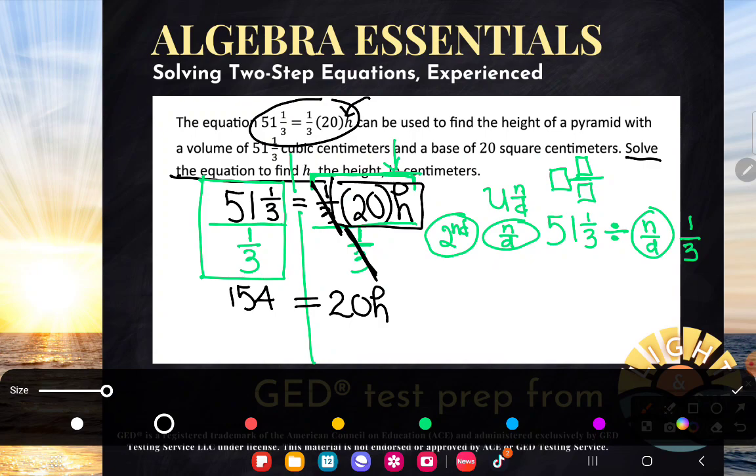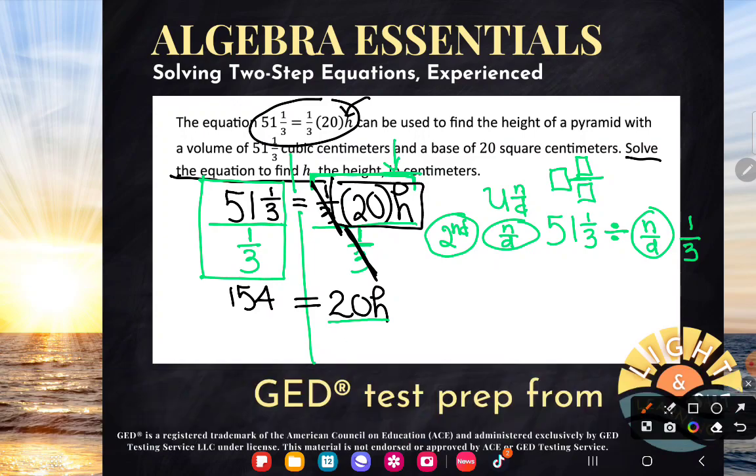because, of course, h is not alone. And so I need to get rid of that 20 so h can be alone. Well, what is 20 doing? It's multiplying. So I'll do the opposite. I will divide by 20.